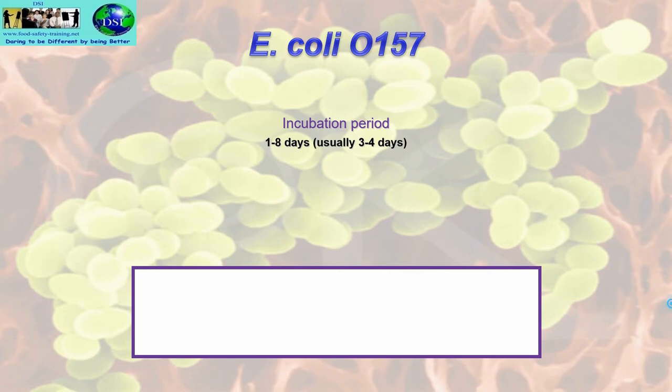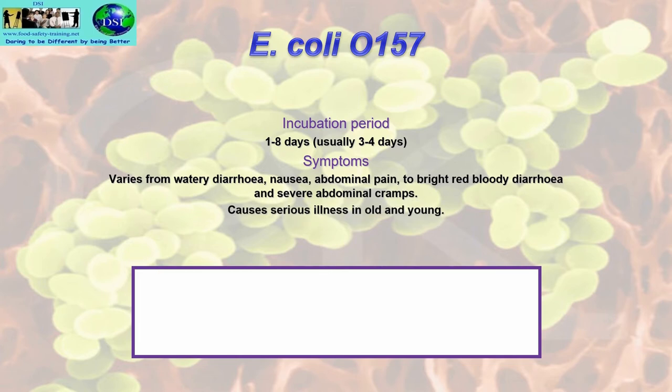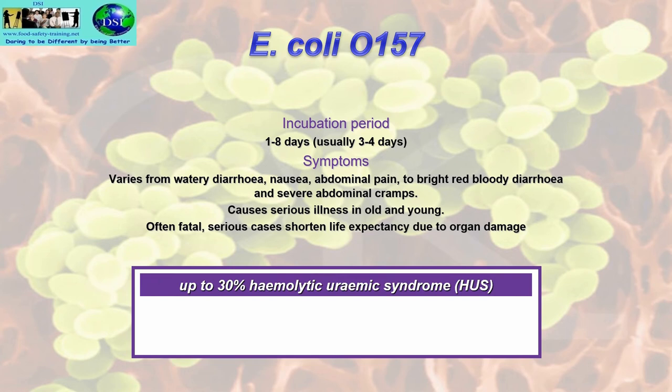Symptoms range from watery diarrhoea and nausea/abdominal pain to bright red bloody diarrhoea and severe abdominal cramps. It causes serious illness in the old and young, and is often fatal. Serious cases shorten life expectancy due to organ damage. Up to 30% of people who contract E. coli O157 develop HUS — haemolytic uraemic syndrome — which breaks down the kidneys.